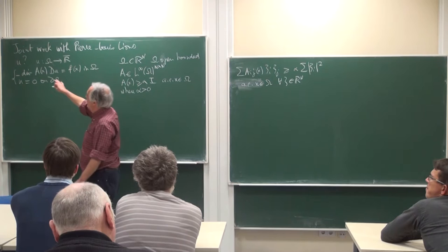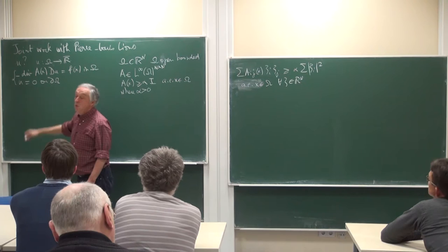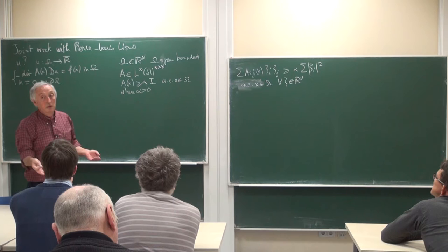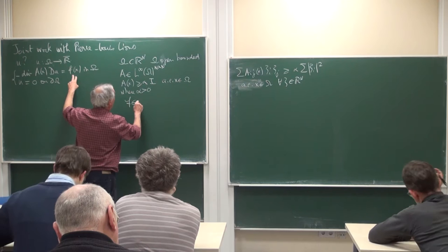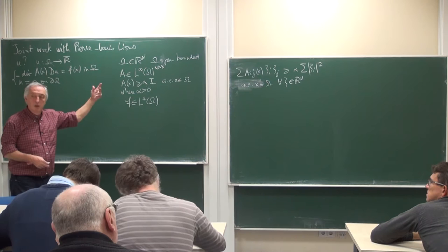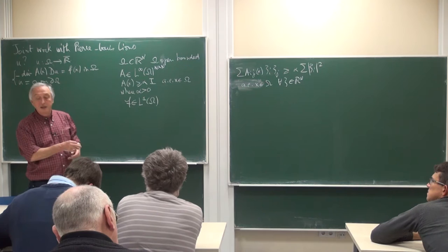So this is the Laplace equation with L∞ coefficients and zero boundary value. Everything is known about that, except something I didn't specify: where is f? f will be a function in L¹(Ω). So this is my problem. I will first describe this problem a little bit, then pass to the nonlinear case.